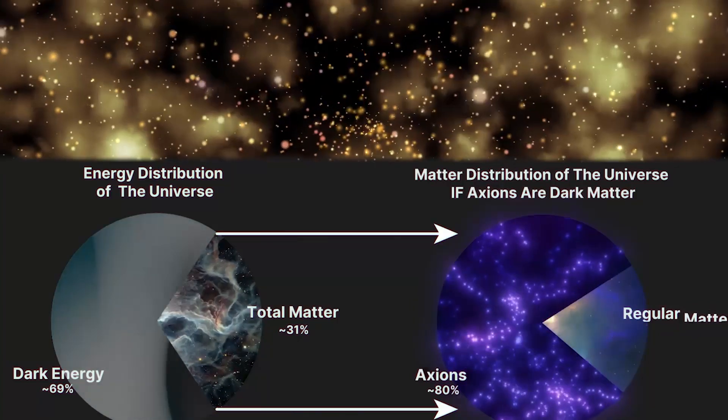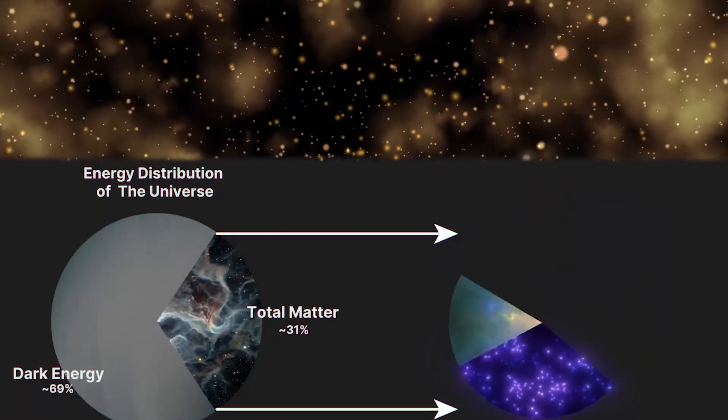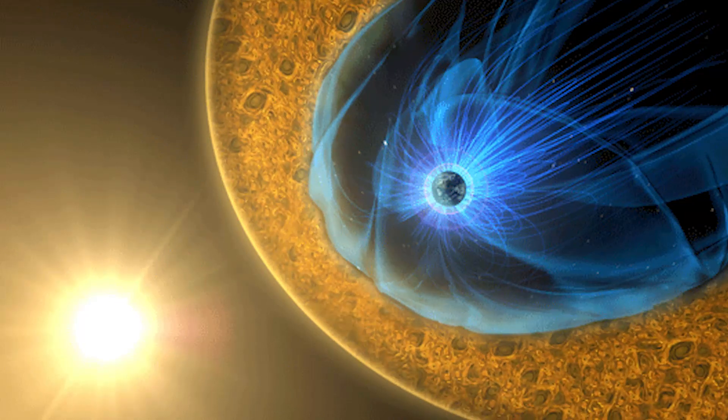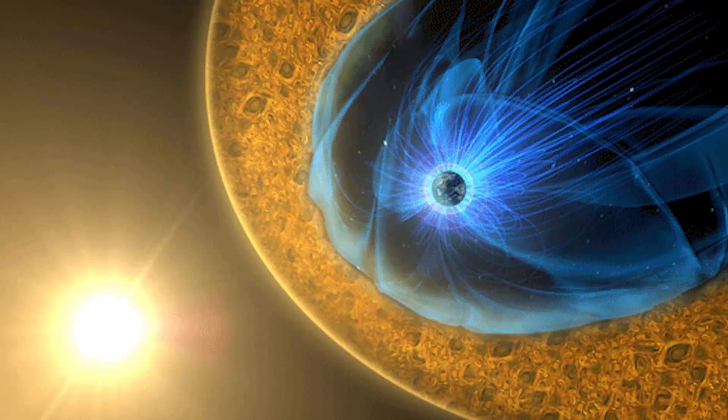Even if these things don't solve the dark matter problem, we really want to know if they exist because of the less famous, but still vexing, strong CP problem. And axions are pretty generic predictions of string theory. So if you want the latter, you probably also want the former.